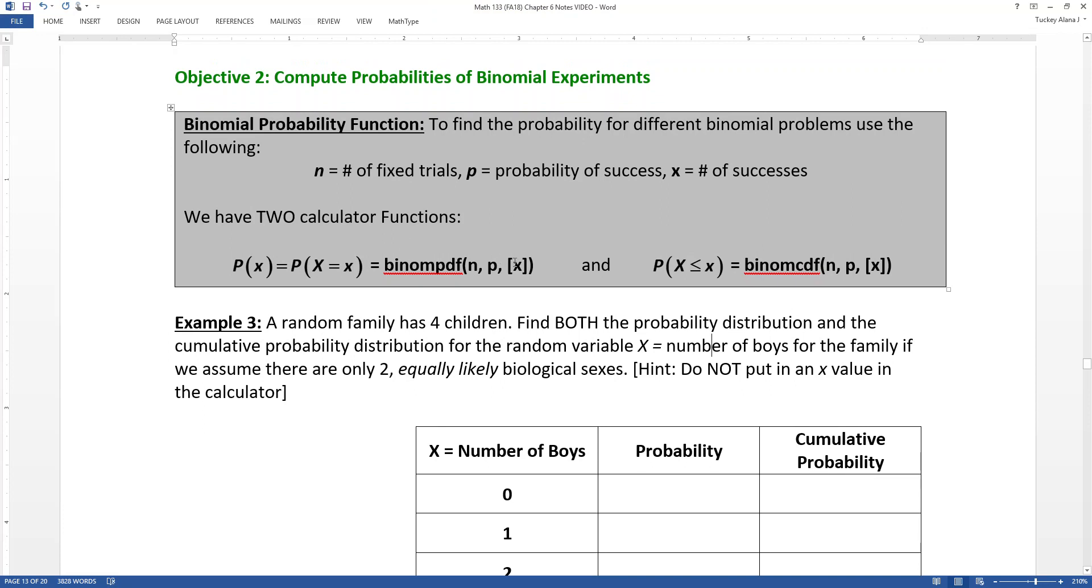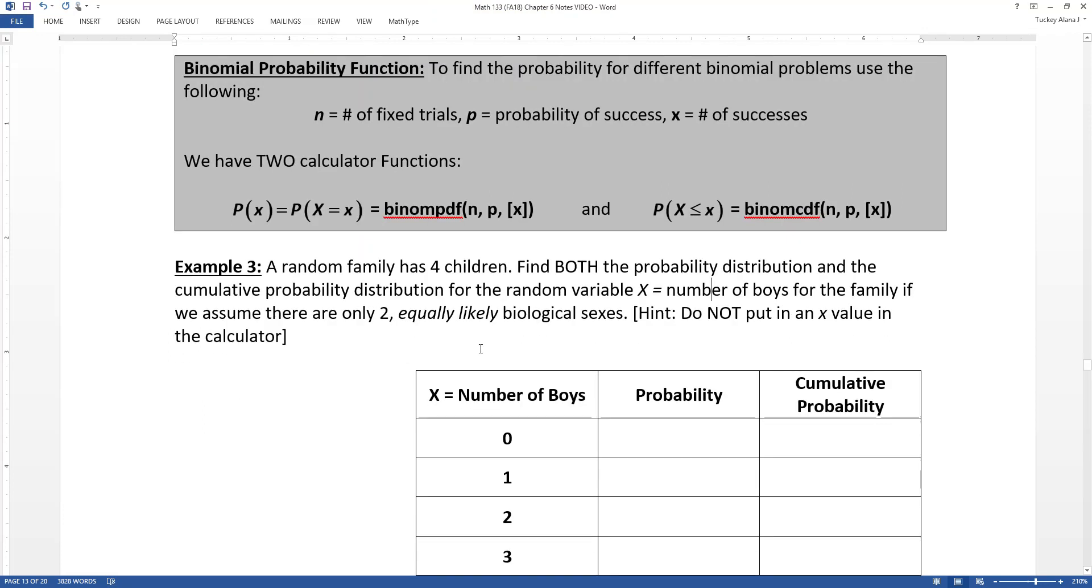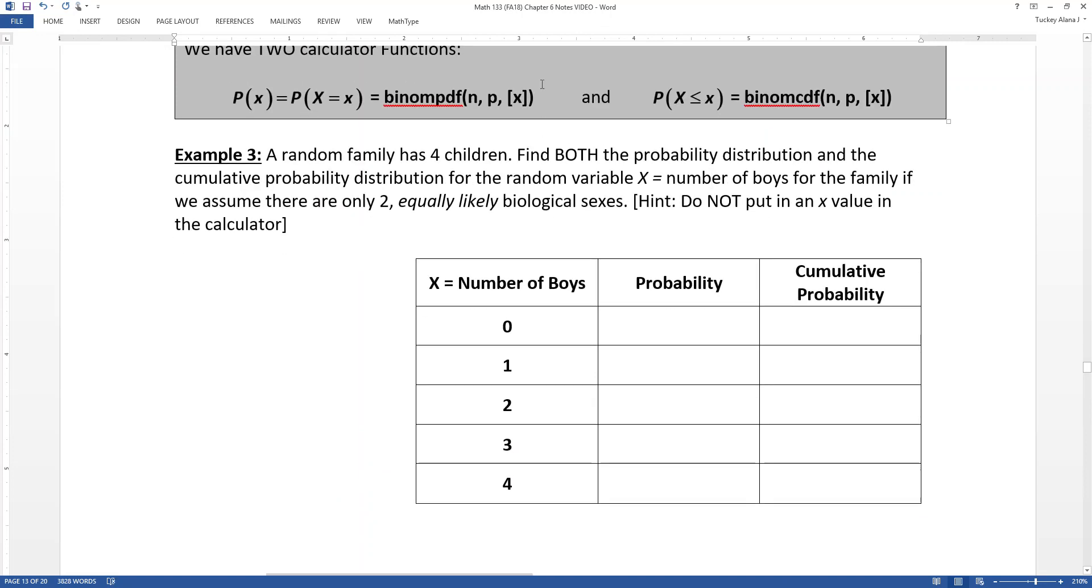We're actually just going to do an example together, and hopefully that will help you understand the differences between those two. So we're going to have a random family that has four children. We're going to find both the probability distribution and the cumulative probability distribution for the random variable X equals the number of boys for the family.